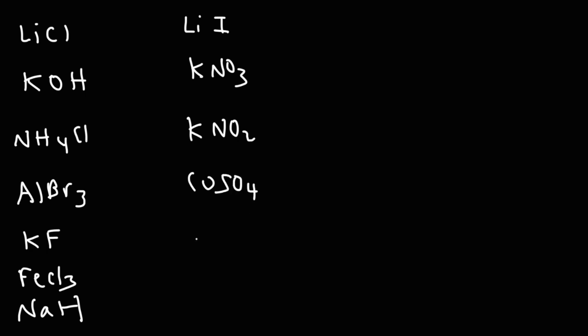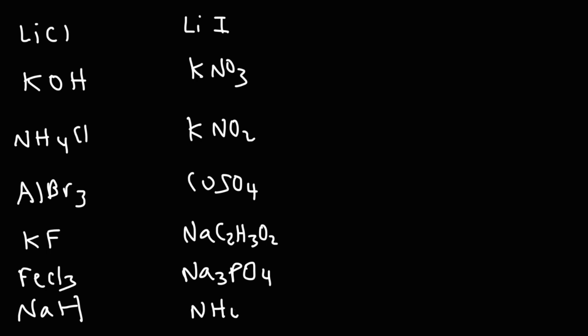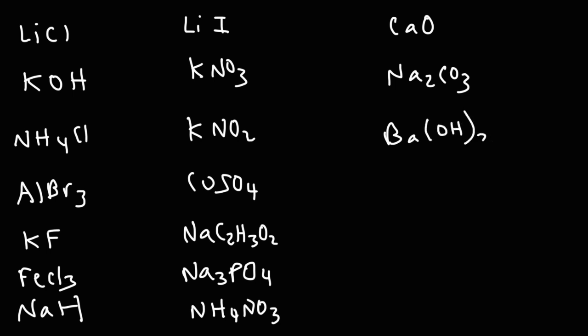It's going to go over a lot of examples so you can really understand the concept. The compounds include calcium oxide, sodium carbonate, barium hydroxide, potassium sulfide, and sodium oxide. Let's start with the first example: lithium chloride. Lithium is an alkali metal — neutral. Chloride is the conjugate base of a strong acid — neutral. So lithium chloride is neutral overall.